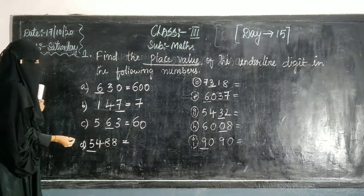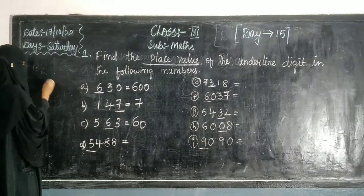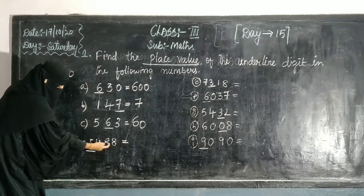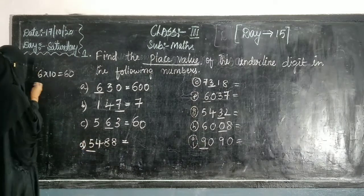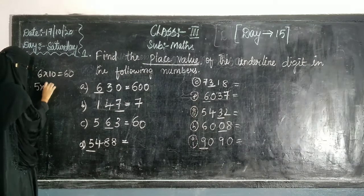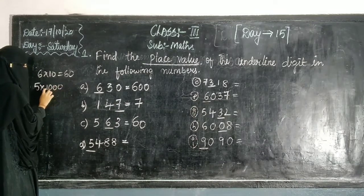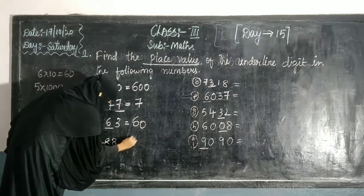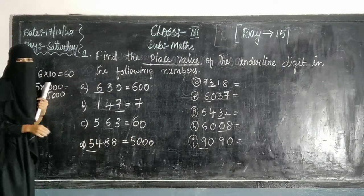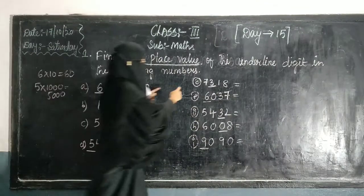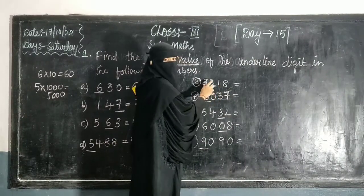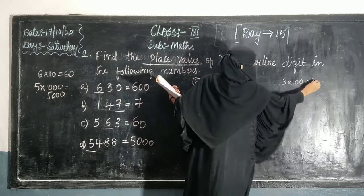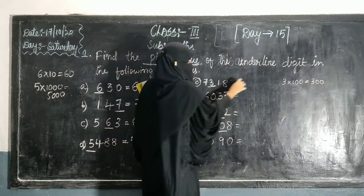Next, for the place value, 1 stands for 100, 1000. What is the place value of 5? Counting the position: 1, 2, 3, 4 — that is the 1000s place. So 5 into 1000 equals 5000. Next, question E: 1 stands for 100. What is the place value of 3? It's in the 100s, so 3 into 100 equals 300.